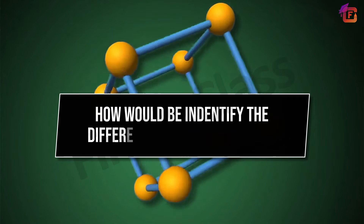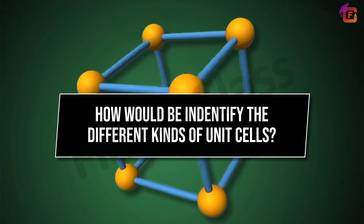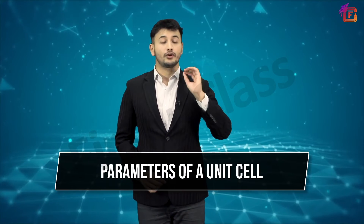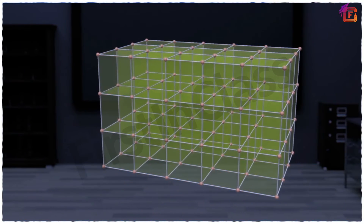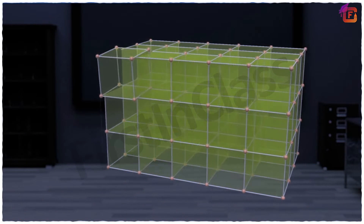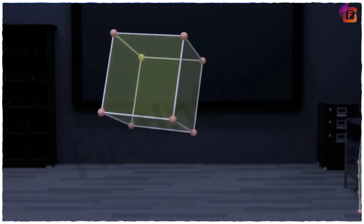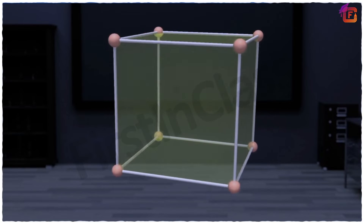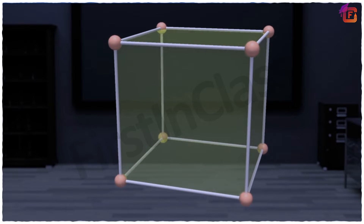How do you identify the different kinds of unit cells? For this, we should have knowledge of the parameters of a unit cell. A unit cell is categorized by its edges and the angles between the edges. The edges of a unit cell are represented by a, b, and c.